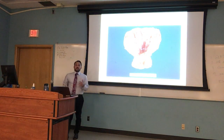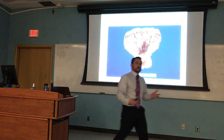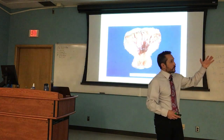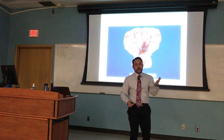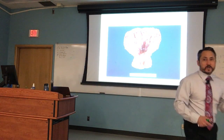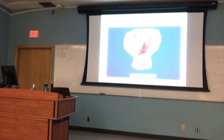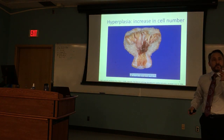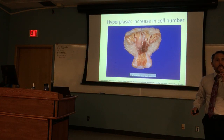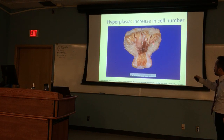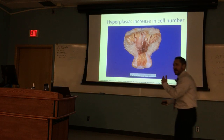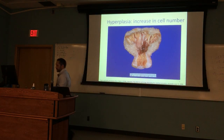Hyperplasia — an increase in cell number — also occurs physiologically with the menstrual cycle or pregnancy. In this gravid uterus specimen, the darker pigmented tissue in the center indicates a greater cell number, while tissue toward the periphery lightens in color because there are fewer cells.